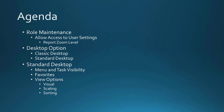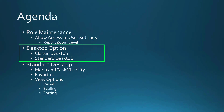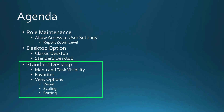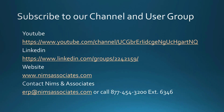In conclusion, we talked about Role Maintenance to give access to User Settings, changing the Report Zoom Level, and the desktop options of Classic versus Standard. Under the Standard desktop: menu and task visibility depends on user rights, users can create Favorites, and there are options for sorting and application scaling. Remember, these settings are specific to the user — there is no global setting. Each user can go into their own User Settings and change these options to suit themselves. You can find us on YouTube or LinkedIn, visit www.NymsAssociates.com, email ERP@NymsAssociates.com, or call 877-454-3300 extension 6346.